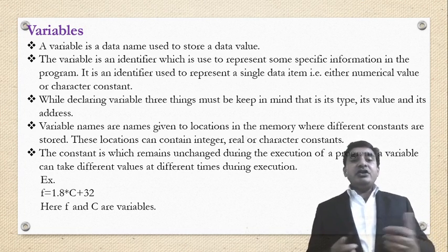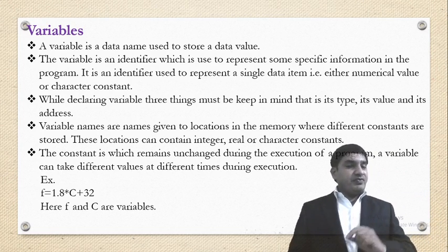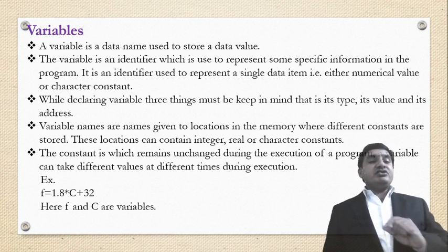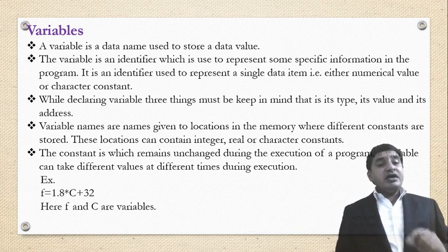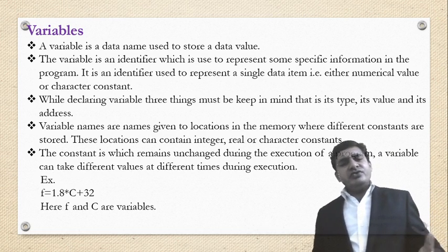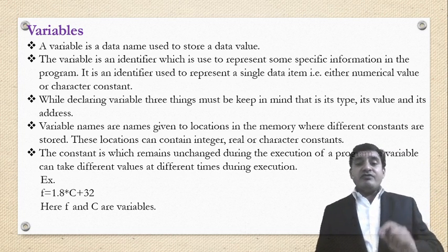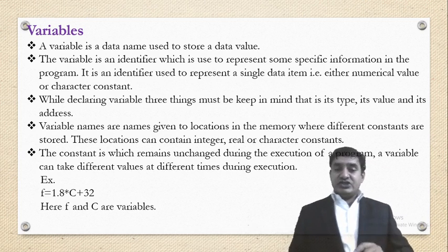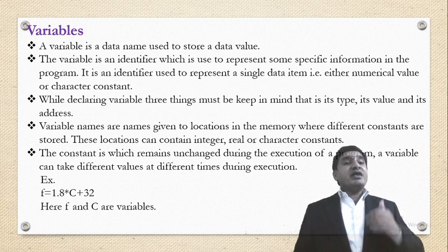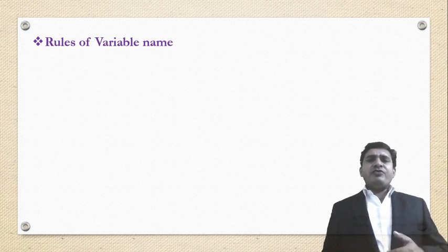For example, consider f = 1.8 * c + 32. Here, f and c are variables — their values can be changed. When the value of c changes, the value of f also changes. We have to declare these variables at the beginning of the program.